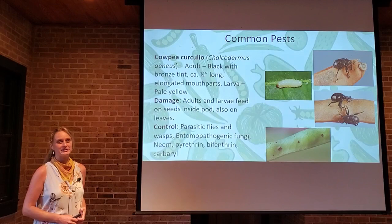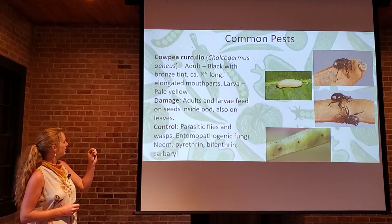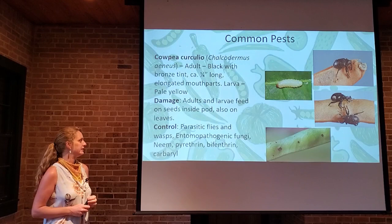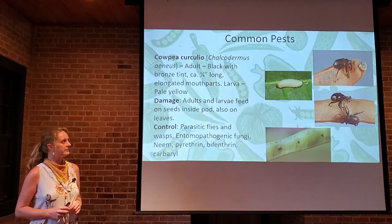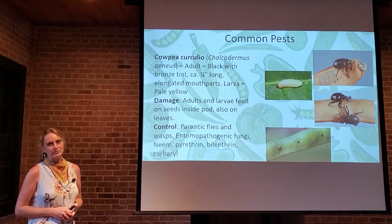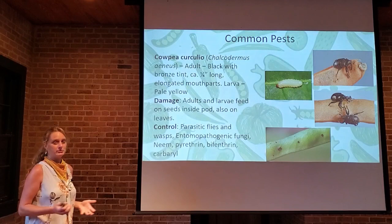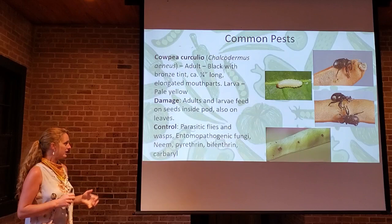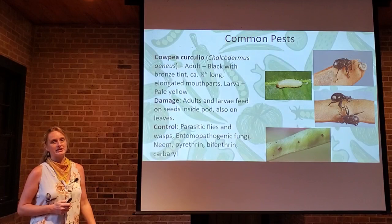The cowpea curculio is a little weevil-like insect about a quarter inch long, black with a long mouth part — a big snout that makes it easy to recognize. The larvae are pale maggots that feed on cowpeas as well. They feed on seeds inside the pods and on the leaves. The adults are visible on leaves; larvae are found inside the pods. Be aware of them especially when growing purple hull peas, cowpeas, or crowder peas. Control options include parasitic flies and wasps, specific fungi, neem oil, and insecticides.